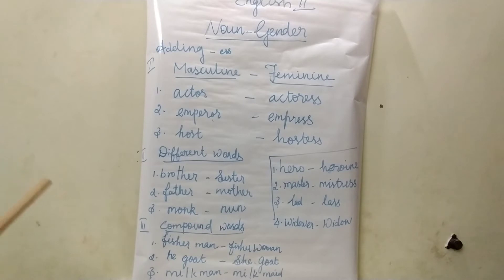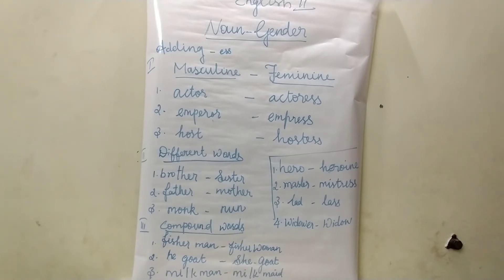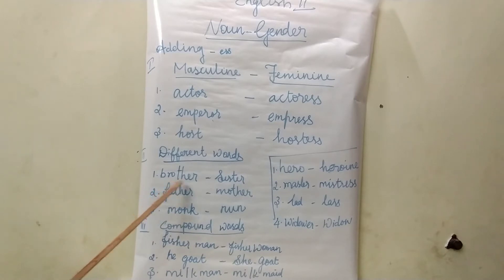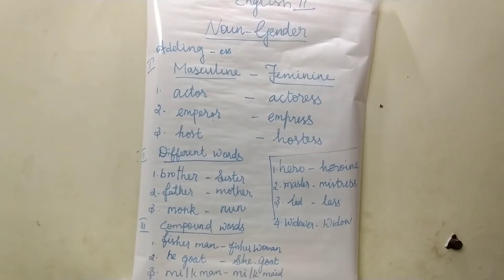The second type: by using completely different words. The masculine gender changes into feminine gender by using a completely different word. Examples: brother–sister, father–mother, monk–nun, cock–hen, gander–goose, horse–mare, lord–lady, son–daughter, bull–cow.